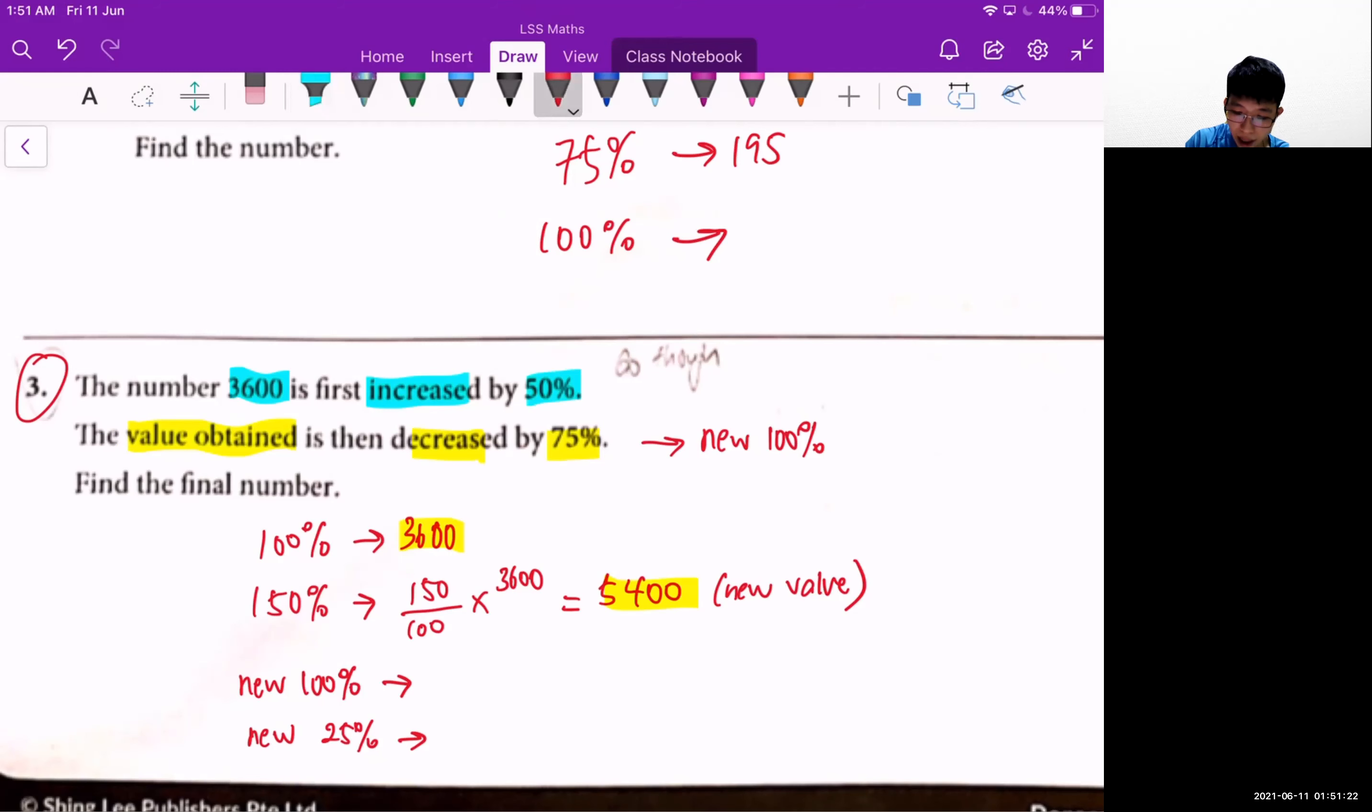This means that this is 100% and the new value obtained here is 150%. 150 over 100 times 3600 gives me 5400. So this is the new value.